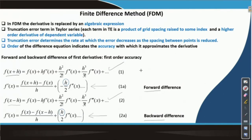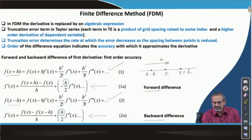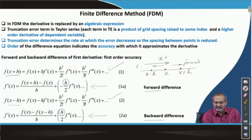If you have a point x and a nearby point x plus h to the right and x minus h to the left, we inherently mean that this is the positive x direction. If you move further towards the positive direction, it is the forward direction. If you move towards the origin, this is the backward direction, and accordingly we name the difference expressions as forward or backward differences.